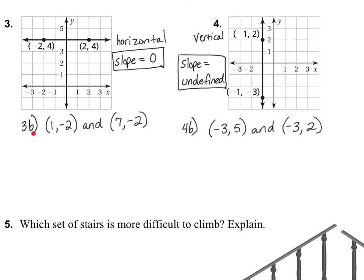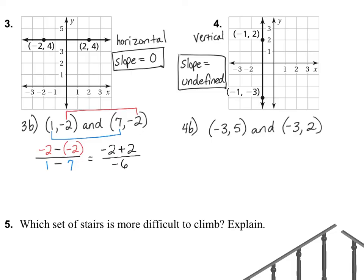Let's practice a couple more using the slope formula — 3B and 4B. For 3B, write the skeleton of the formula with a fraction line and two subtraction signs. Y values on top: negative 2 minus negative 2 — that's a double negative, so negative 2 plus 2. X values on the bottom: 1 minus 7, which is negative 6. So we get 0 over negative 6. Anytime 0 is on the top, the answer is 0 — so this is a slope of 0.